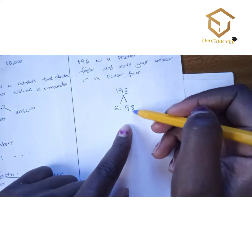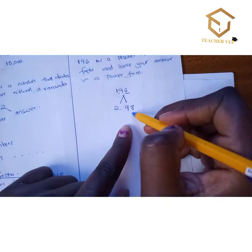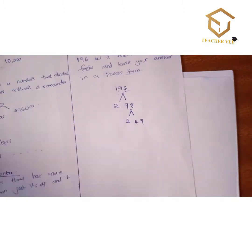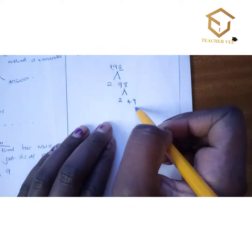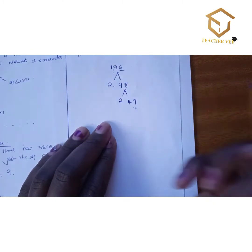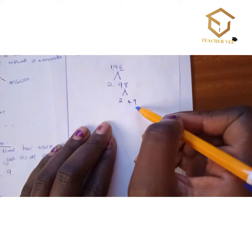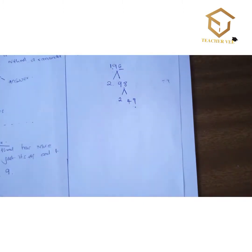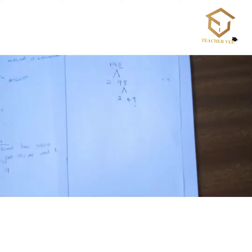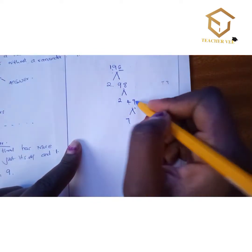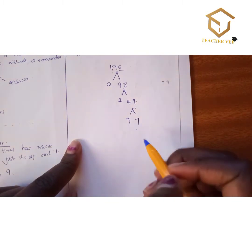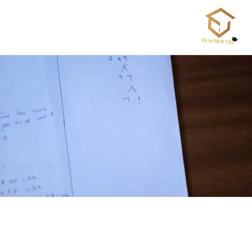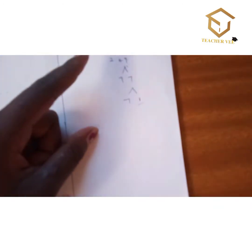Check the smallest prime number that can divide 98 — again it is 2, giving you 49. Since 2 does not divide 49 evenly, we go to the next prime number, 3. Three will not divide 49 without a remainder. The next prime, 5, also does not divide 49. So it is 7: divide 49 by 7 you get 7, then divide 7 by 7 you get 1.